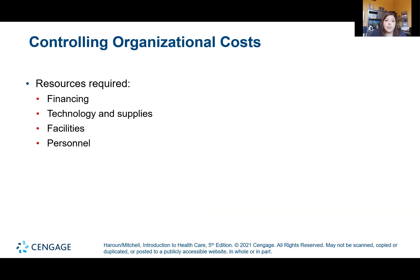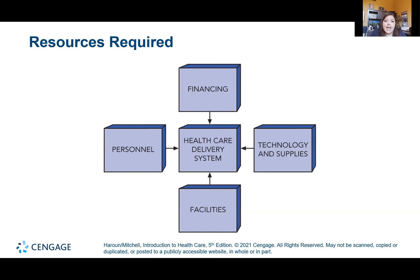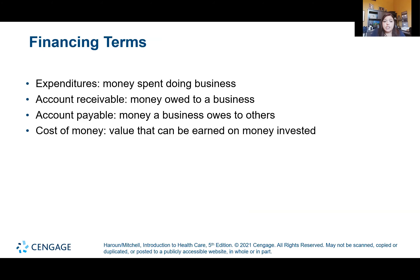The last part covers controlling organizational costs. When we look at resources — financing, technology, supplies, facilities, and personnel — all of those go into the cost of the healthcare delivery system. Some key terms: expenditure is the money spent doing business; accounts receivable is money owed to a business; accounts payable is money a business owes to others; and the cost of money is the value that can be returned on money invested.